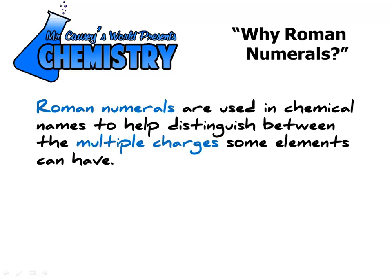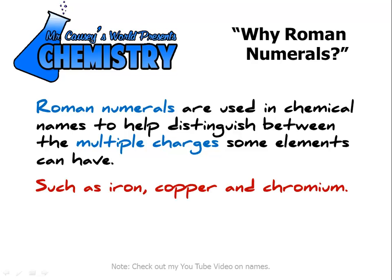The thing to remember is that the Roman numerals are used in names to help distinguish between the multiple charges some elements can have, such as iron, copper, and chromium, just to name a few.